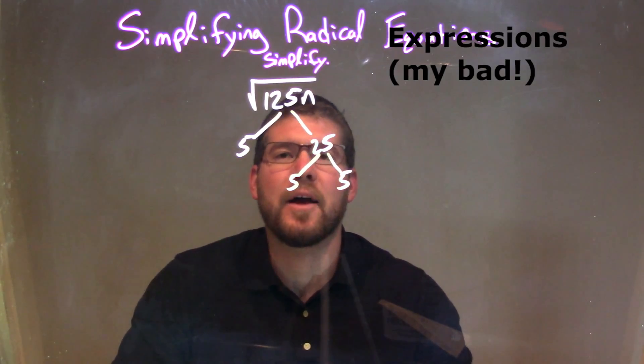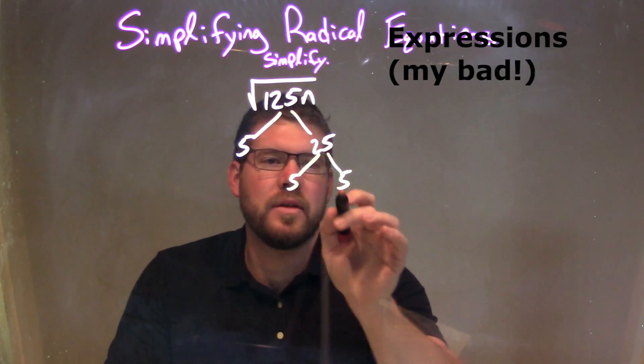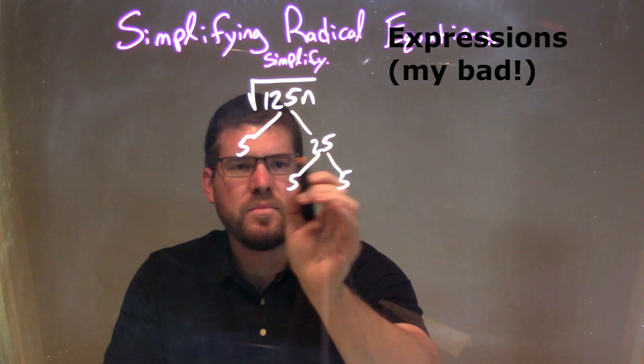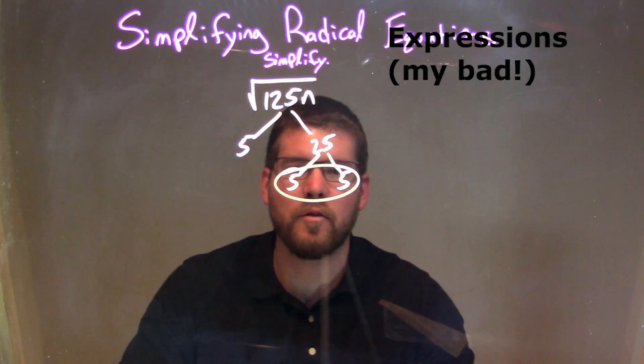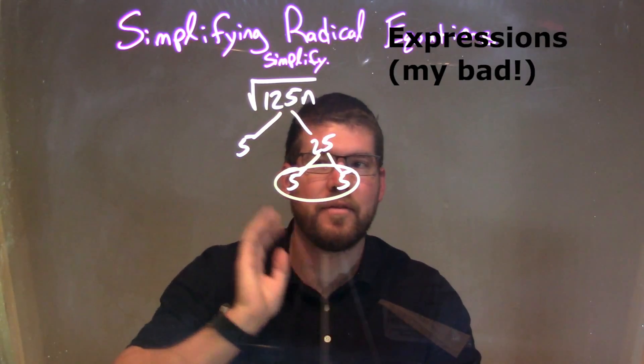So what I like to do is I grab pairs. So when I've broken it down, I can't break down each one of these anymore. They're all down to the lowest prime number. I need to grab a pair. So I'm going to grab a pair of these 5s. I see one pair of 5s, good. I circle, but then I don't have another pair. That 5 is by itself.